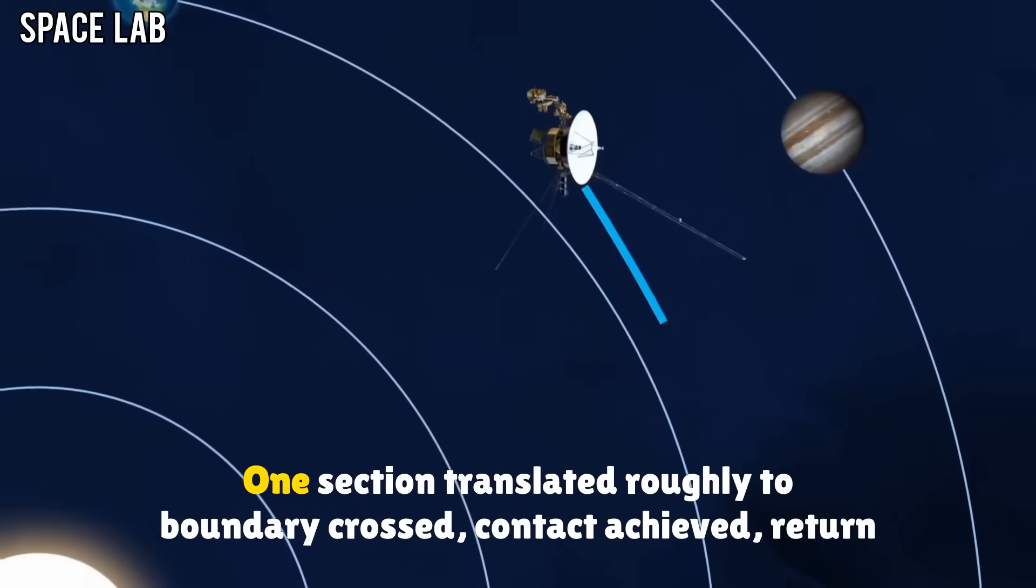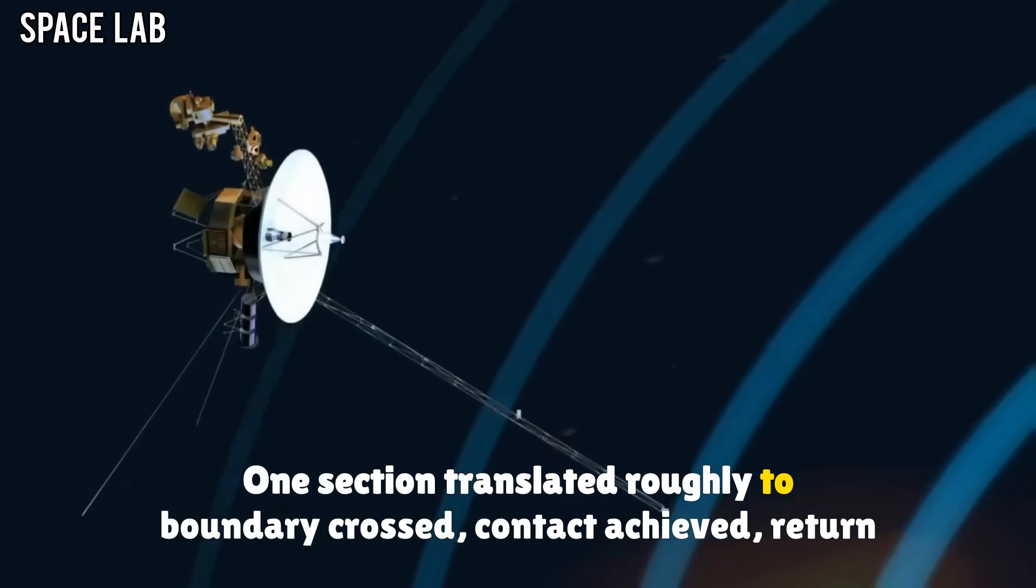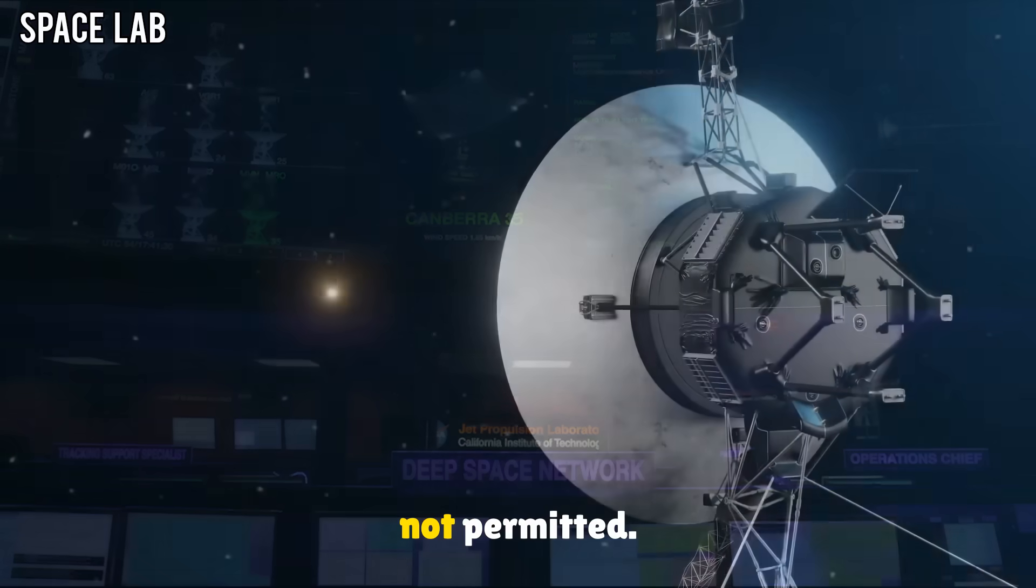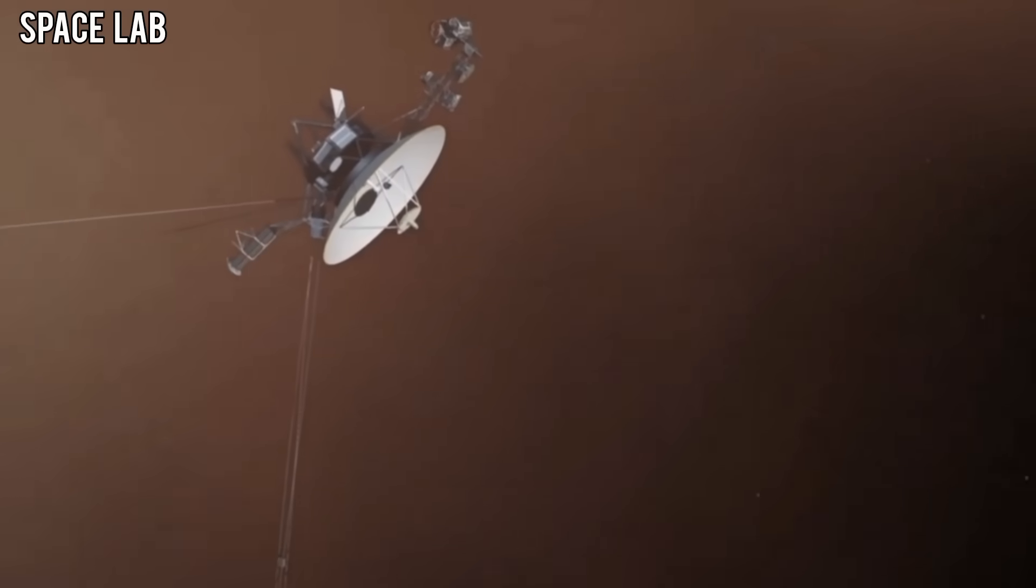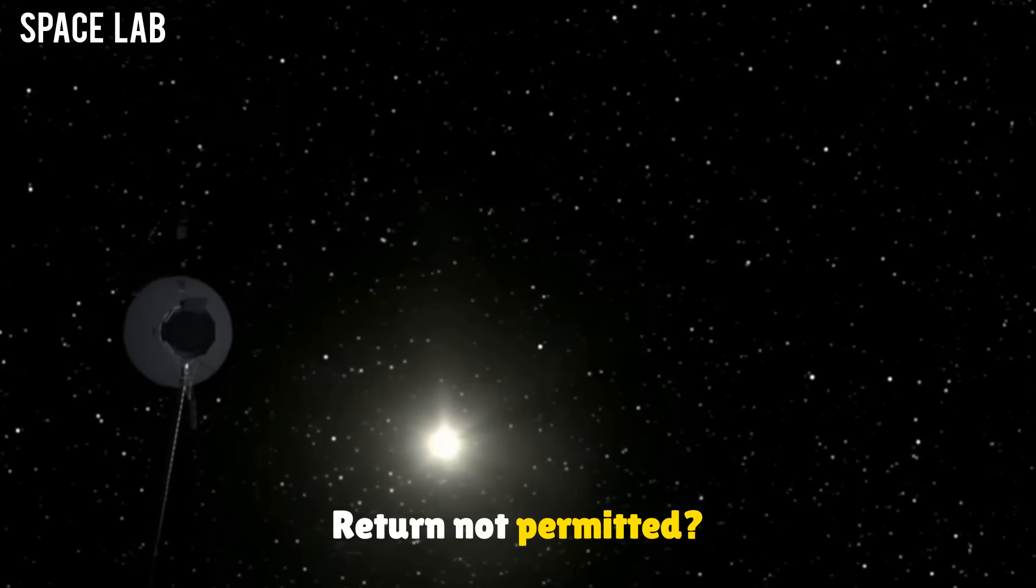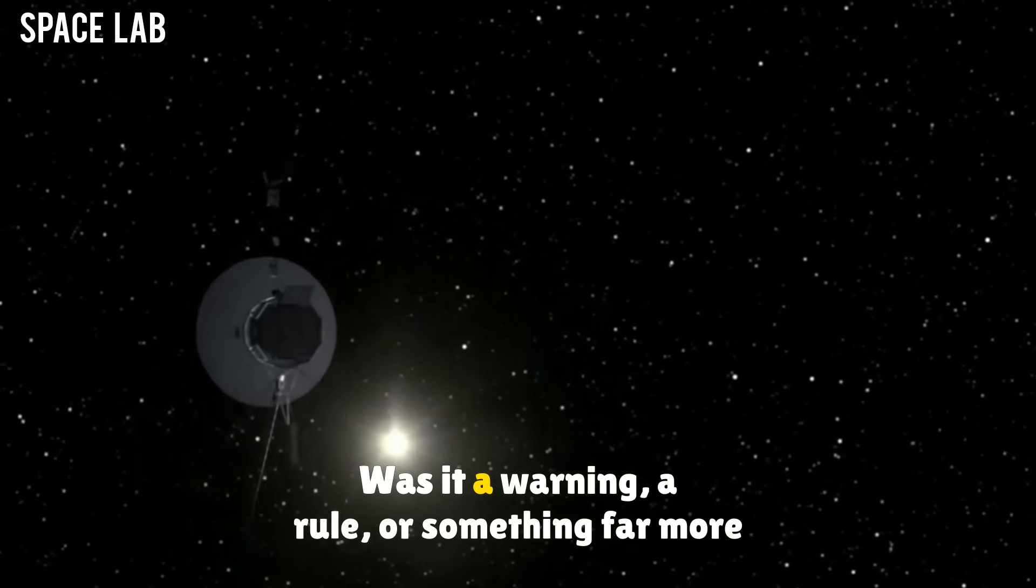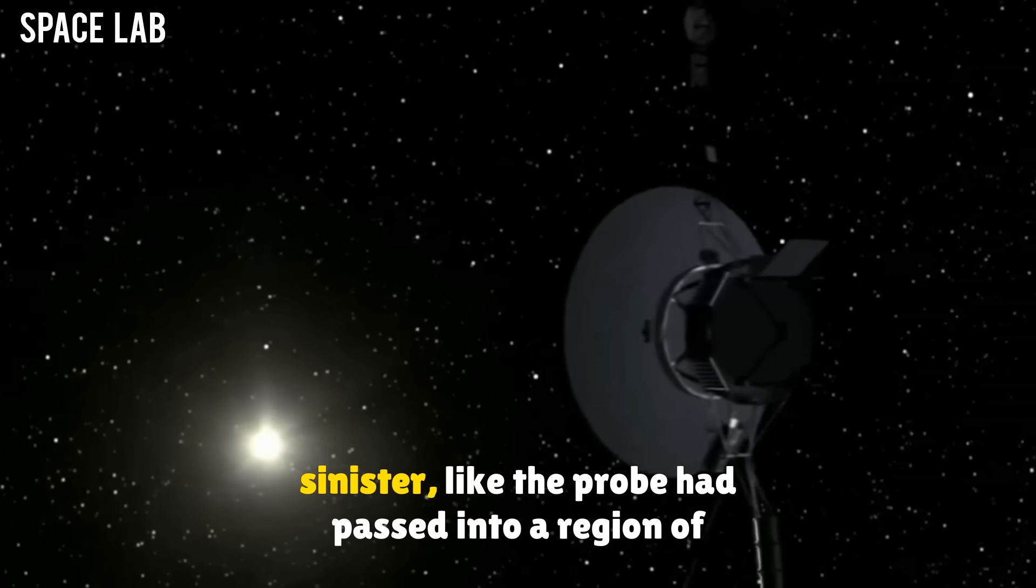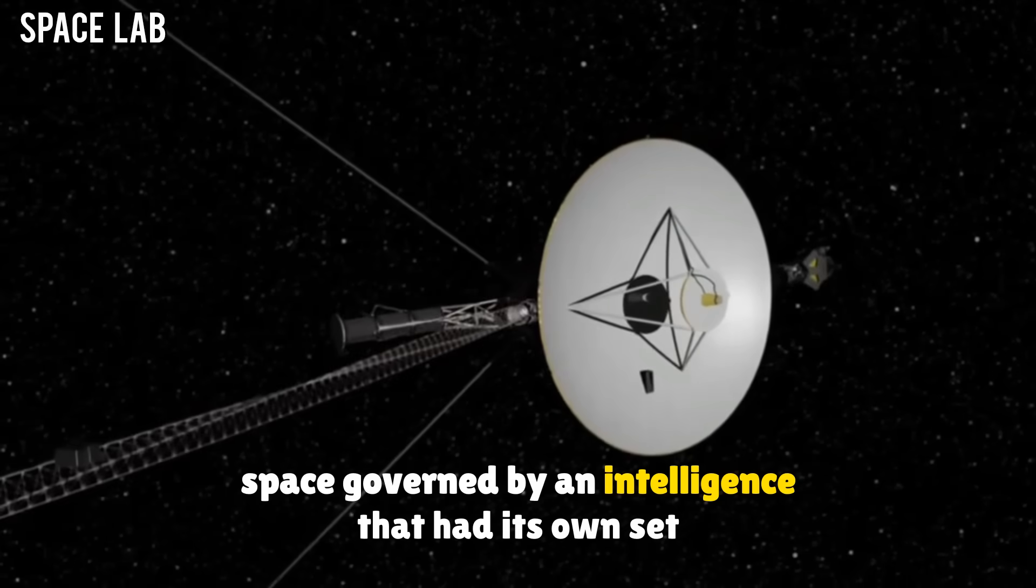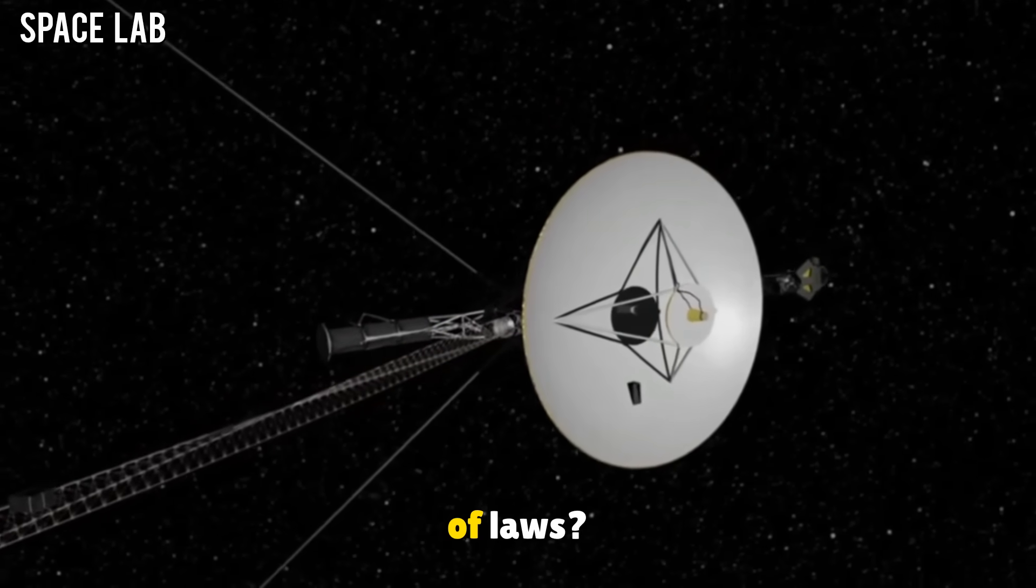One section translated roughly to boundary crossed, contact achieved, return not permitted. The statement sent shock waves through the global scientific community. Return not permitted? Was it a warning? A rule? Or something far more sinister, like the probe had passed into a region of space governed by an intelligence that had its own set of laws?